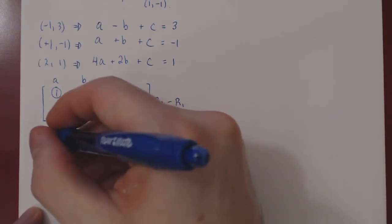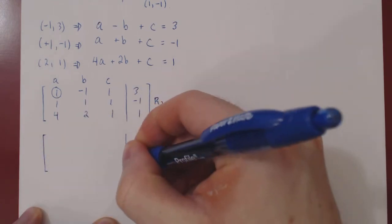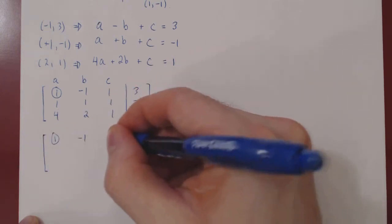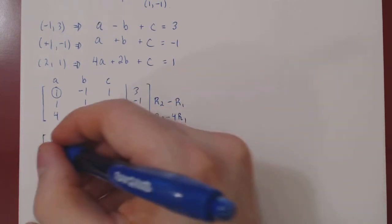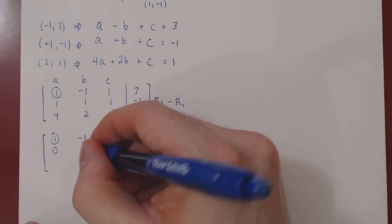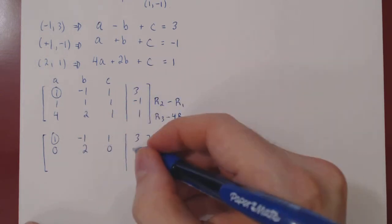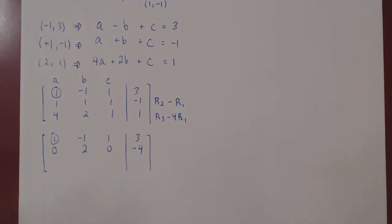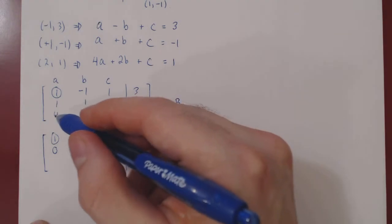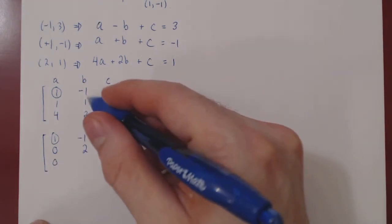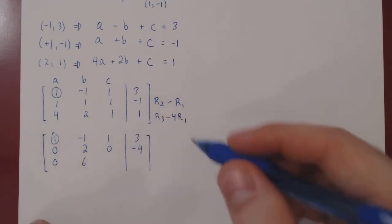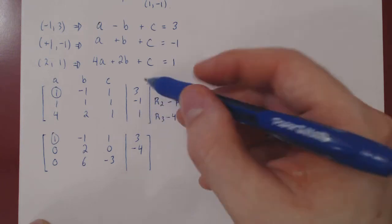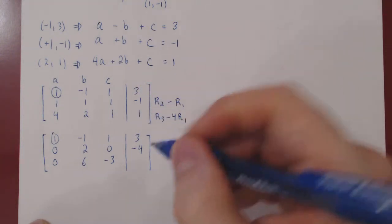One minus one is zero. One minus negative one is two. One minus one is zero. One minus three, negative four. Four minus four is zero. Two minus four times negative one is plus four is six. One minus four, negative three. One minus four times three minus twelve, negative eleven.